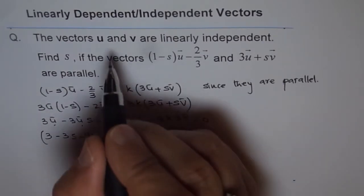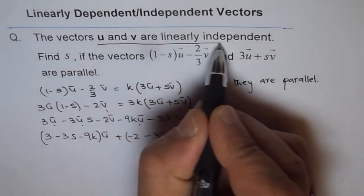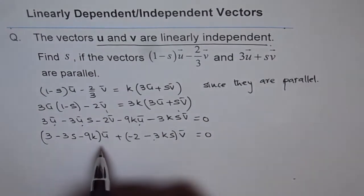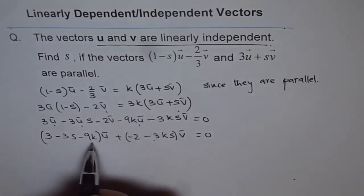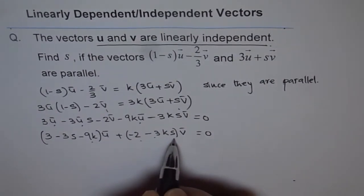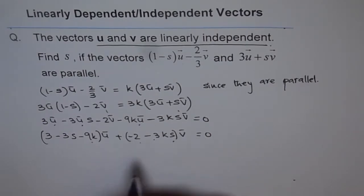U and v are linearly independent. That means, this is 0 and this is 0. So, that gives us two equations to solve for s.